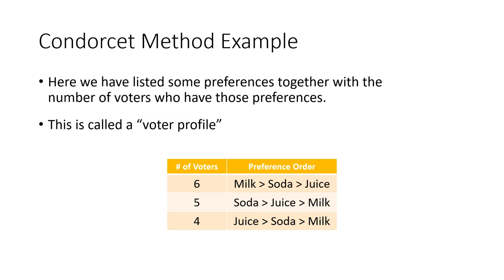Let's see an example. Here we have a voter profile. We have six voters who prefer milk first, soda second, juice third. We have five voters who prefer soda first, juice second, milk third. We have four voters who prefer juice first. We're grouping together voters that all have the same preference to make it easier — rather than having 15 separate ballots, we group together the ones that are the same, like making piles of paper ballots listed in the same order.